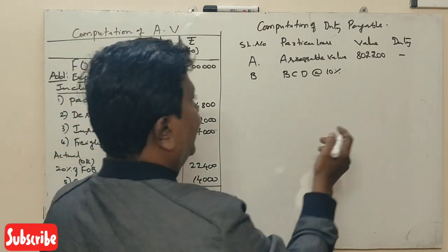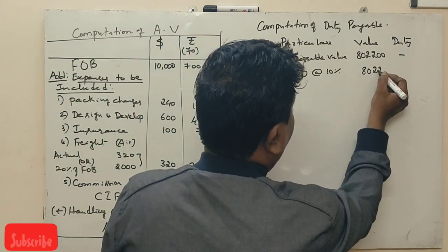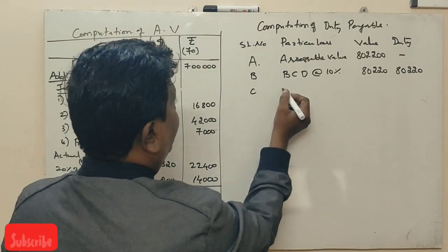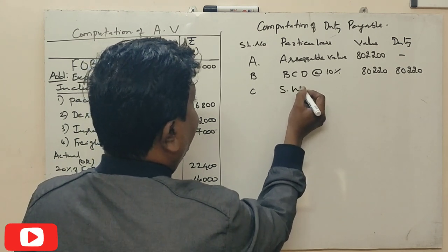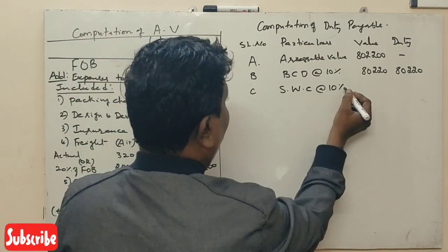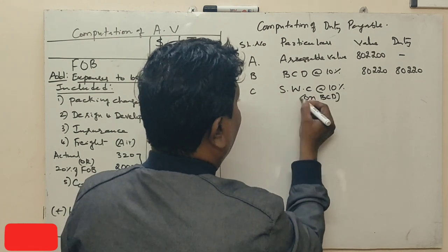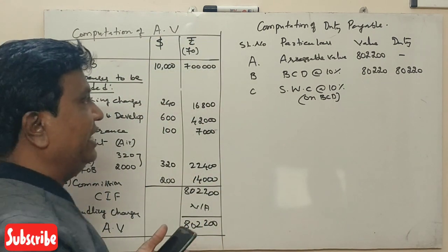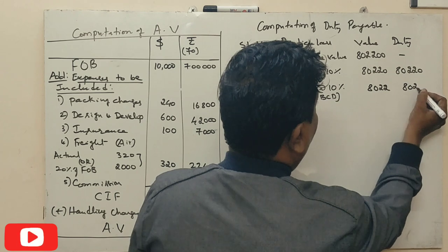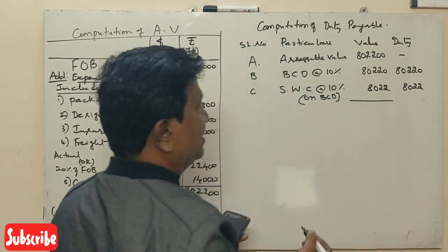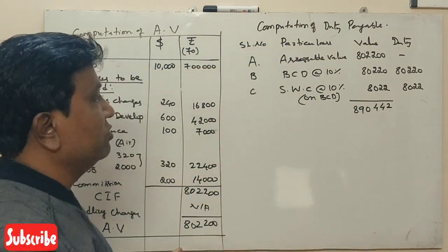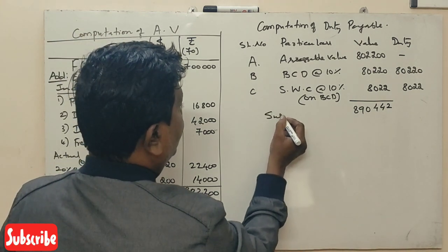B: Basic Customs Duty at 10 percent on the assessable value is 80,220. C: Social Welfare Cess, 10 percent on BCD, which is 80,220, equals 8,022. First calculate subtotal: 8,90,442.